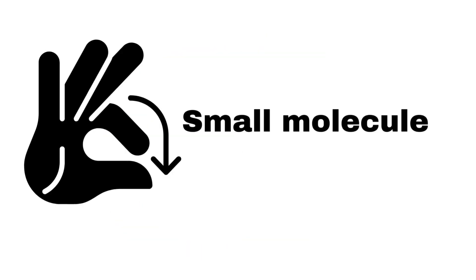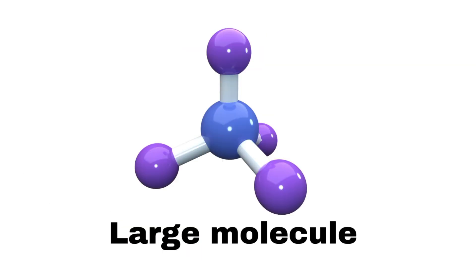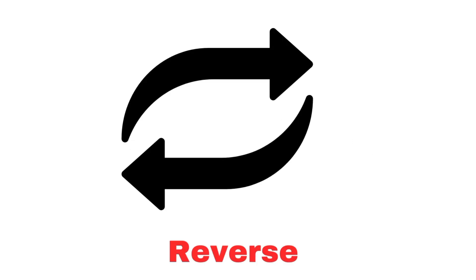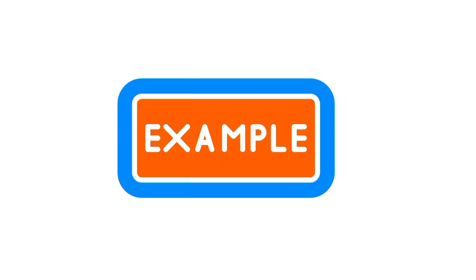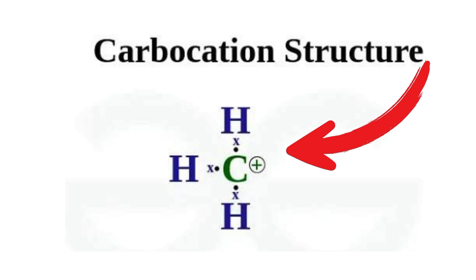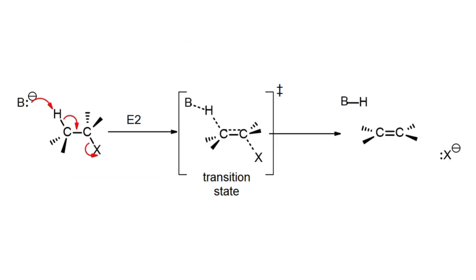Elimination reactions involve the removal of a small molecule from a larger one, typically resulting in the formation of a double or triple bond. These reactions are the reverse of addition reactions and often occur in saturated compounds. For example, in unimolecular elimination, the reaction proceeds via a carbocation intermediate, while in bimolecular elimination, the reaction occurs in a single step.